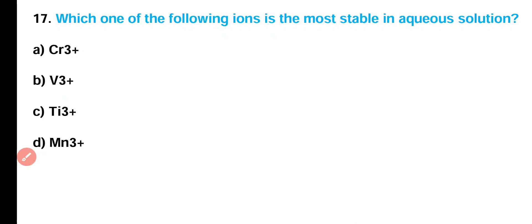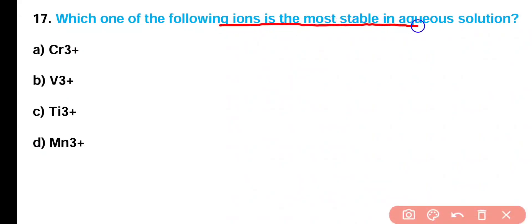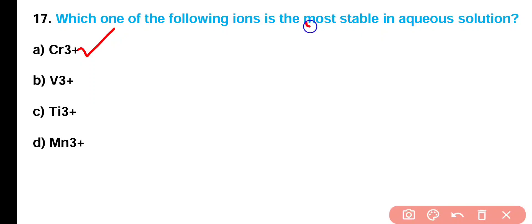Question number 17: Which of the following ions is most stable in aqueous solution — (A) chromium ion, (B) vanadium ion, (C) titanium ion, or (D) manganese ion? Correct answer is option A. Chromium ion is most stable in aqueous solution because it has half-filled orbitals. Elements or ions with half-filled or fully-filled orbitals are most stable.